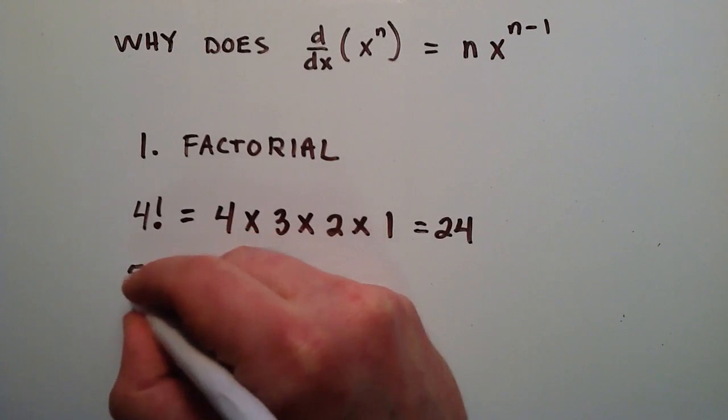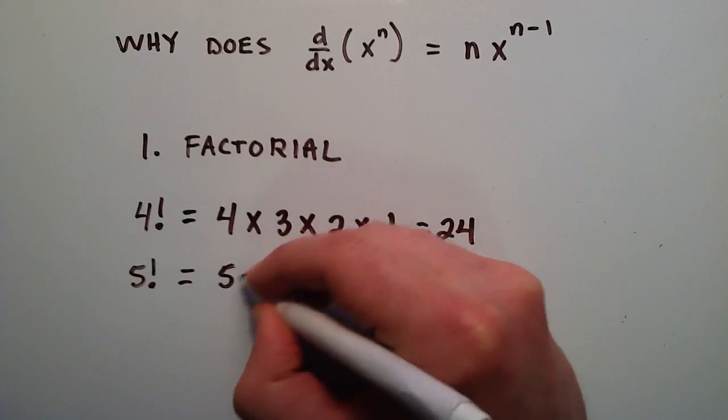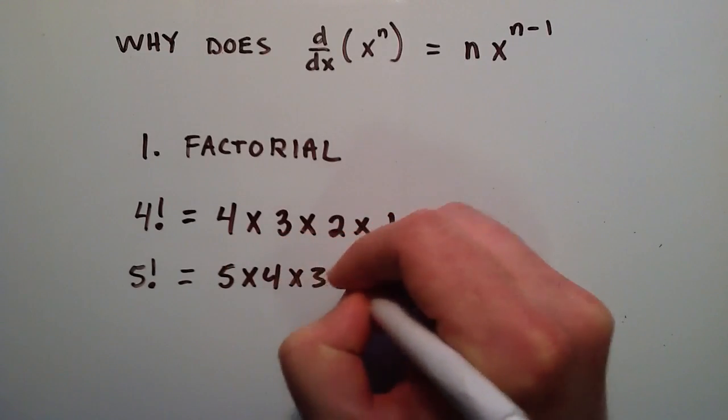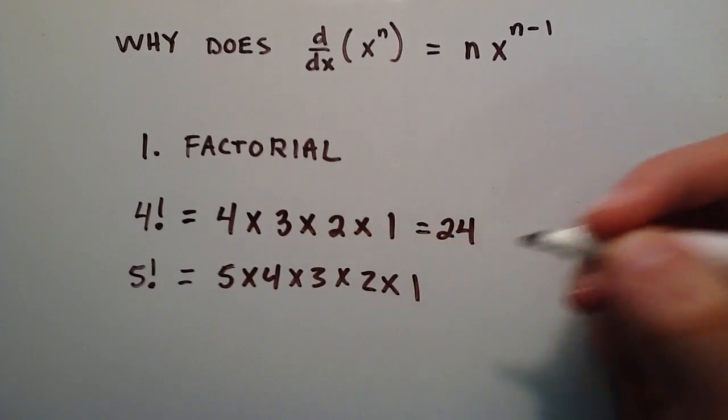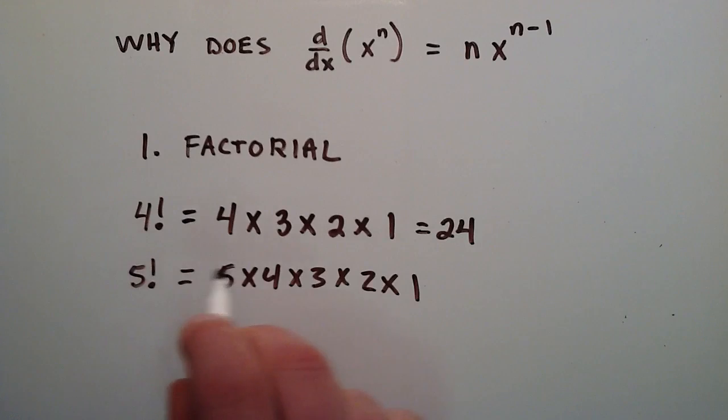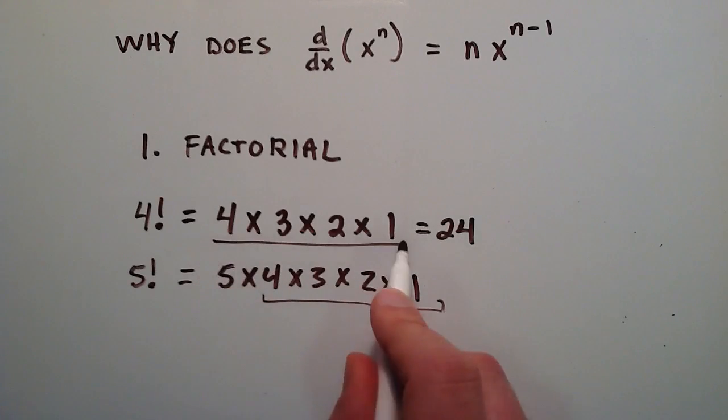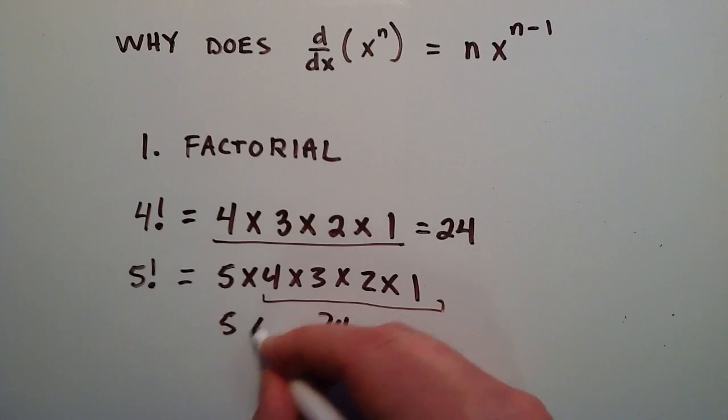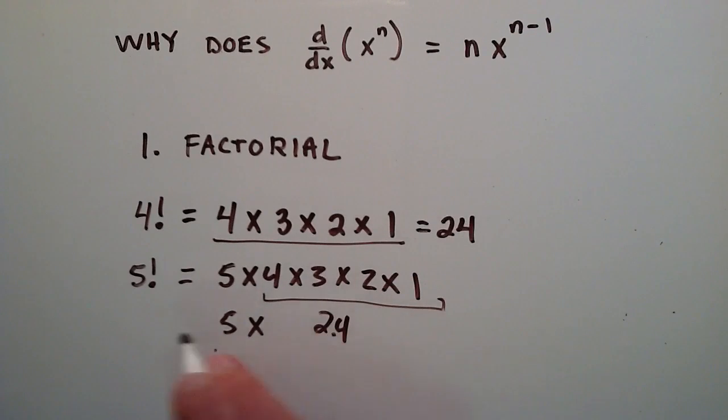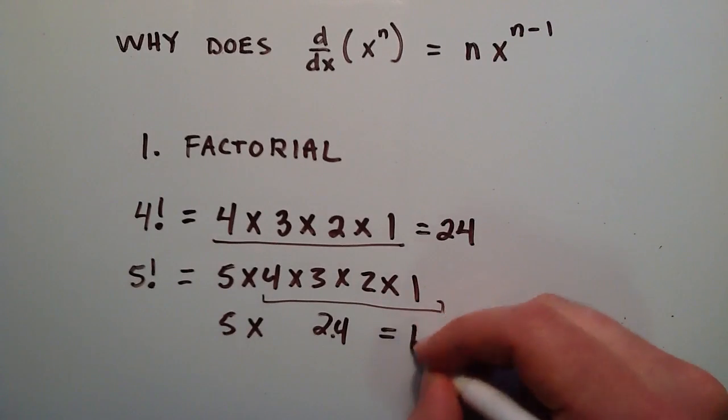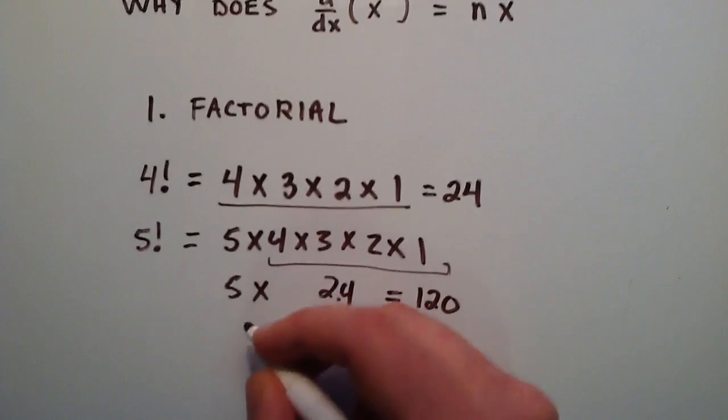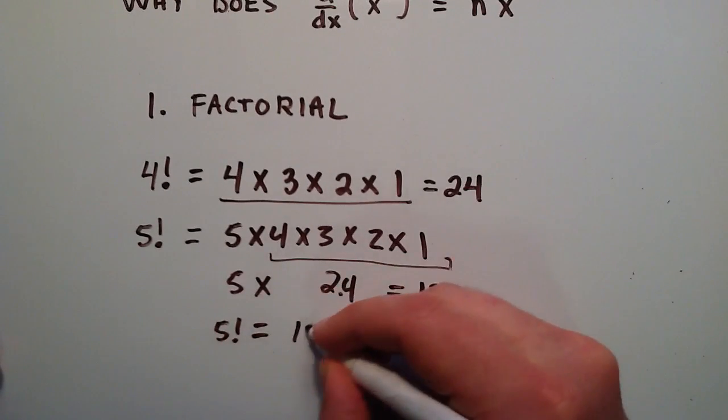So for another example, if we did 5 factorial, it's going to be 5 times 4 times 3 times 2 times 1. So you start with the number 5, and you just decrease by 1 and multiply them all together. Well, we already know that 4 factorial is 24. And this right here is really 4 factorial. So this part right here is 24. So 5 factorial is just going to be 5 times 24. And 5 times 24 is equal to 120. So 5 factorial equals 120.